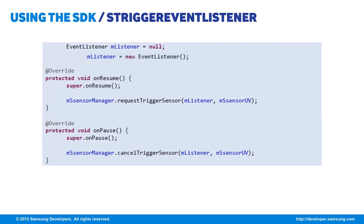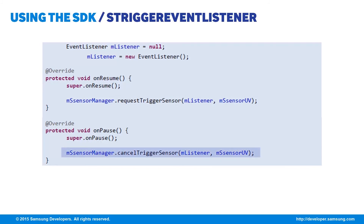Now that we have a listener for events, we need the sSensorManager to register and unregister the event listeners. We call msSensorManager's requestTriggerSensor in our activity's onResume method, passing our mListener object of type EventListener and msSensorUV of type sSensor to register the listener. Similarly, we call msSensorManager's cancelTriggerSensor in our activity's onPause method, passing the same mListener and msSensorUV objects to unregister the event listeners. That's our simple code for getting the amount of ultraviolet light on the sensor of the phone.